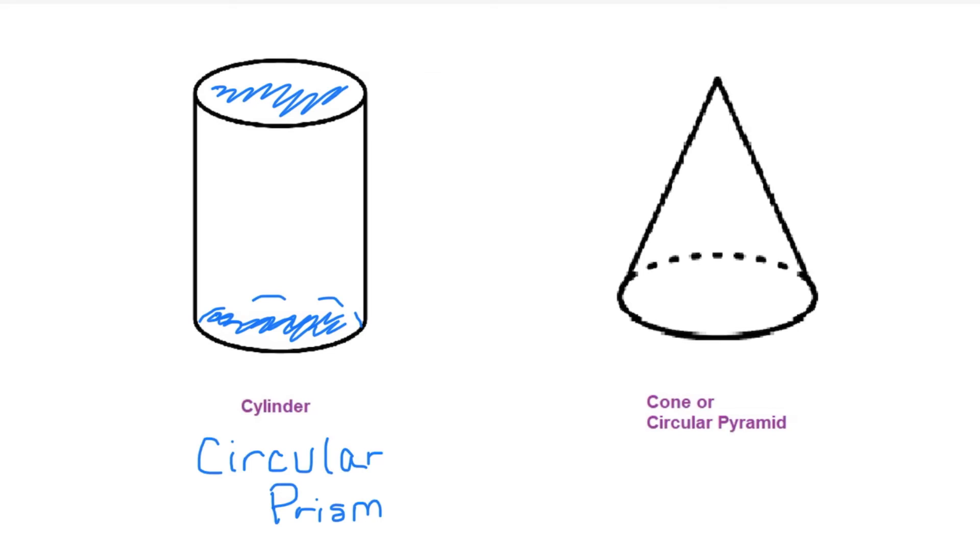A circular prism or you can call it a cylinder. Here you have your circular shape here at the bottom and it goes to one common vertex. So when you have a common vertex, that is considered a pyramid. So this is a circular pyramid or a cone.